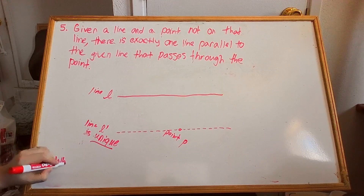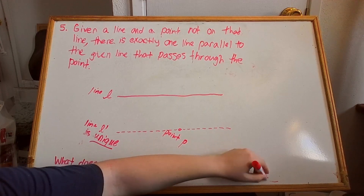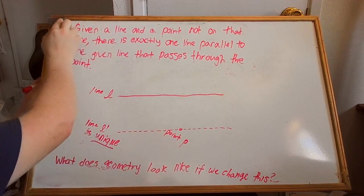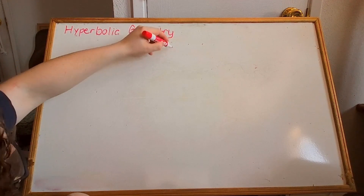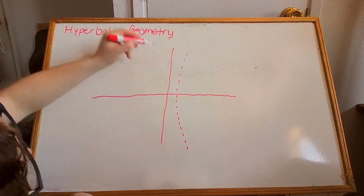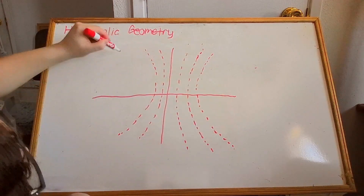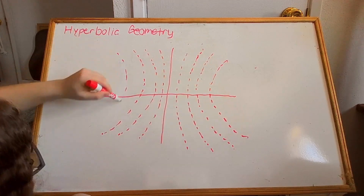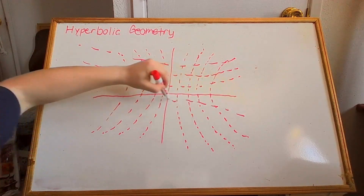That last one — the parallel postulate — is the strange one. It's longer, less intuitive, and for centuries people tried to prove it using the first four. No one succeeded. Eventually, someone asked: what if we change it? In Euclidean geometry, through a point not on a line, there is exactly one line that does not intersect the original line — exactly one parallel line. This describes a familiar flat geometry most of us learn in school, where space is level and parallel lines never touch, no matter how far you extend them.